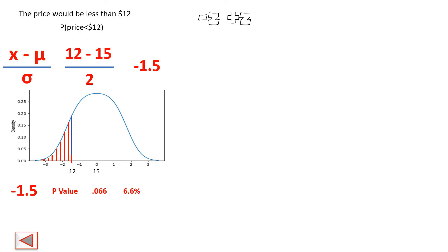Rounding, we get approximately 0.066, or 6.6%. So we can conclude that the probability of a product price being less than $12 is 6.6%. This is how you solve a real-life problem using the standard normal distribution. Now let's look at the second problem statement.